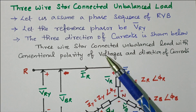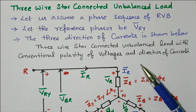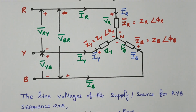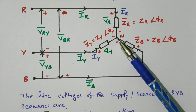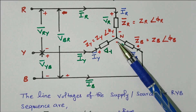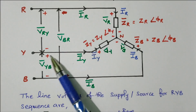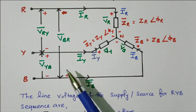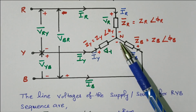The 3-wire star connected unbalanced load with conventional polarity of voltage and directions are given below. Now we will refer the diagram so that we will see the direction of current as well as the voltage. This is the star connected configuration — star connected means 3 ends of RYB are connected to a common point called the neutral point or star point. The other ends are available at the output side: RYB. One end of all 3 phases are connected together to form the neutral point or star point.